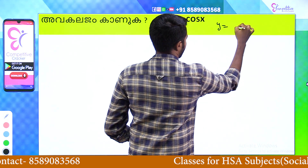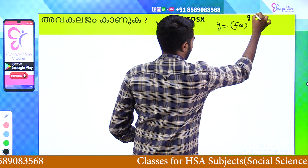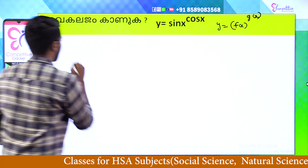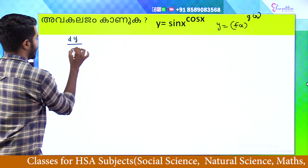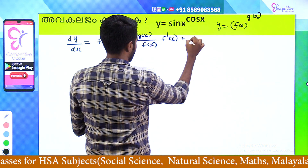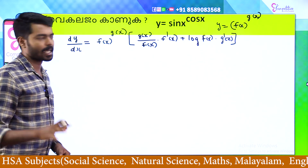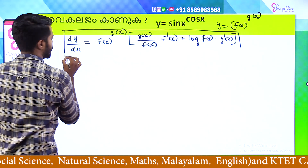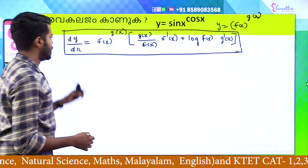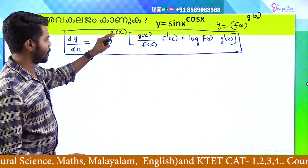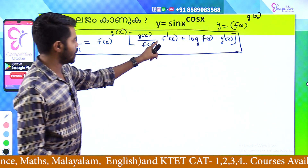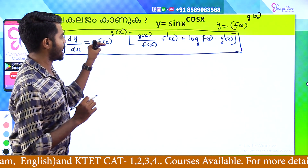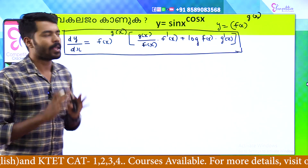What is the general form? y is equal to f(x) raised to g(x), where one function is the base and the other is the power. The formula is: dy/dx is equal to log(x) · g'(x). Let's go to this equation. dy/dx is equal to f(x)^g(x) · [g(x)/f(x) · f'(x) + log f(x) · g'(x)].